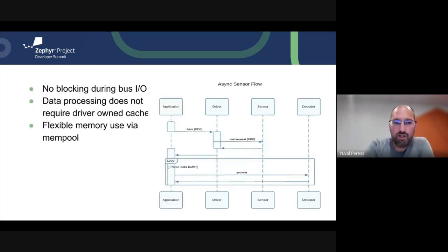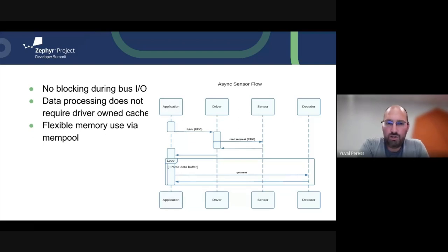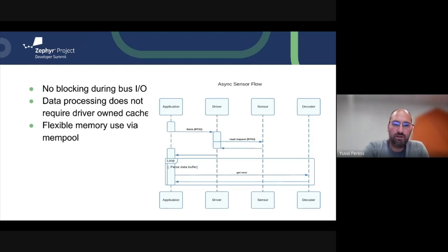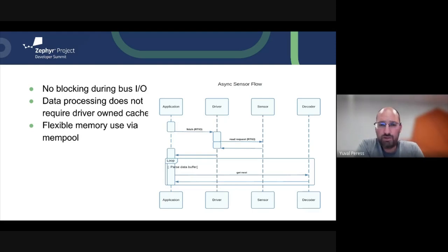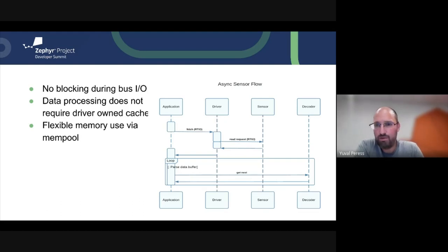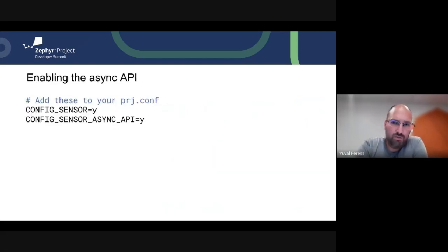When we move to an asynchronous flow, we get non-blocking calls during bus I/O thanks to the RTIO subsystem. Data processing does not require anything from the driver cache, because the application now owns the memory. Having application-owned memory gives us a lot of flexibility through what we'll use as a mempool. Another interesting aspect of this is that the decoder is never blocked and is 100% stateless — it is associated with the sensor type via the compatible string and can technically be instantiated without a sensor being connected.